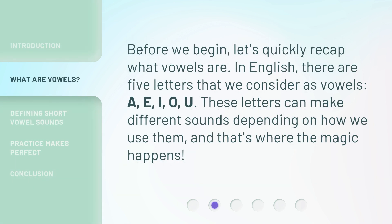Before we begin, let's quickly recap what vowels are. In English, there are five letters that we consider as vowels: A, E, I, O, U. These letters can make different sounds depending on how we use them, and that's where the magic happens.